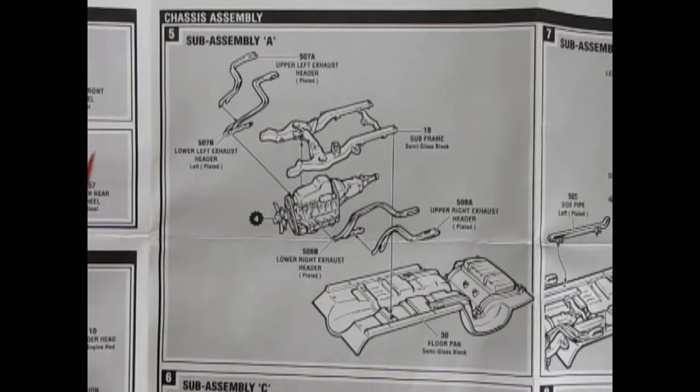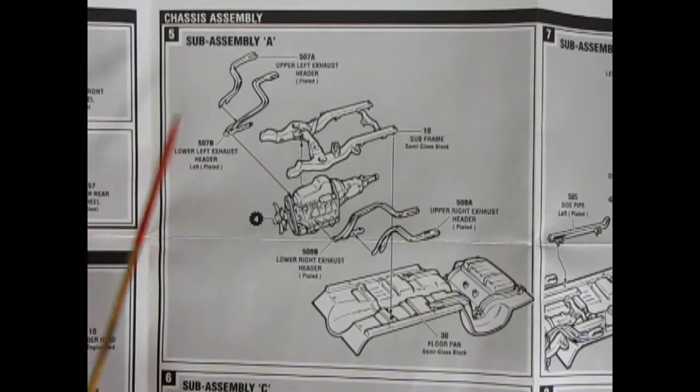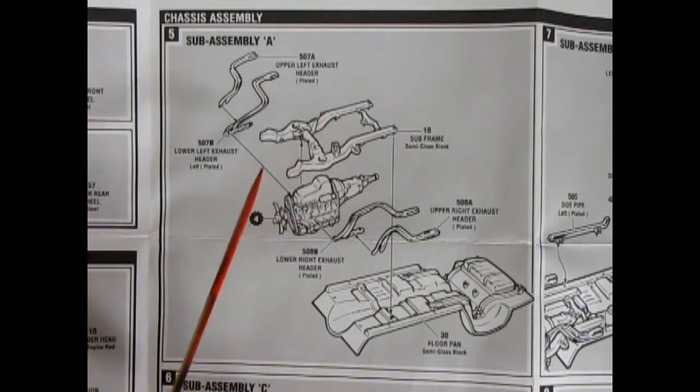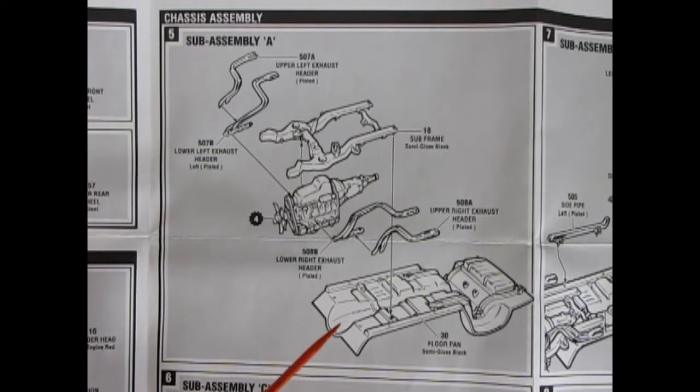Next up, we have our chassis assembly. And here is sub-assembly A. So, you actually get a sub-frame with this Camaro, which is a really nice touch. This, of course, would be sort of a unibody, almost, style.